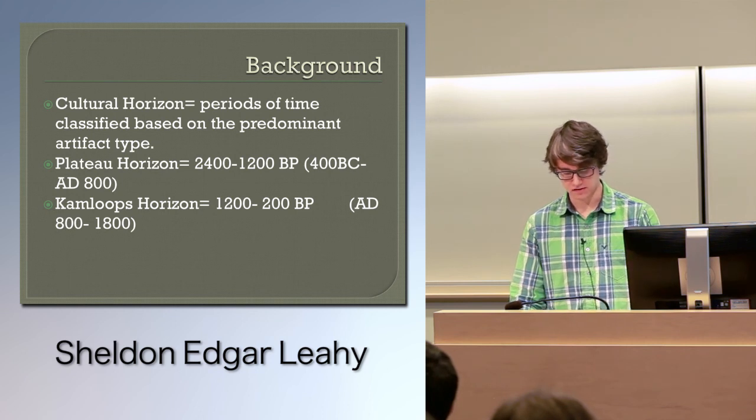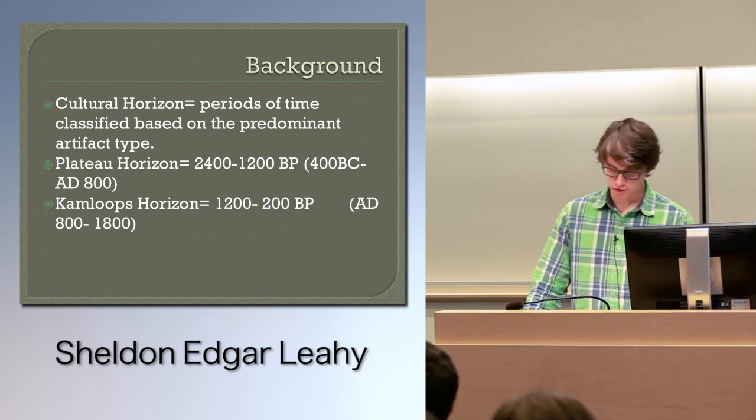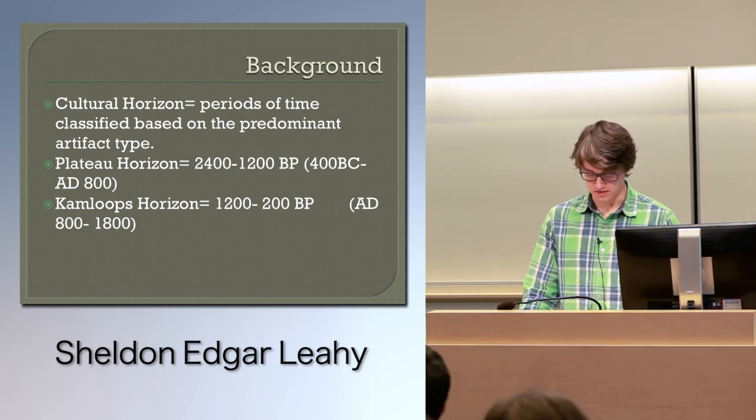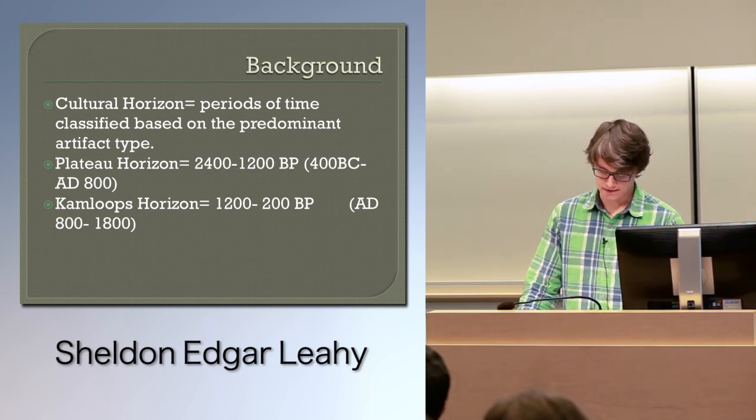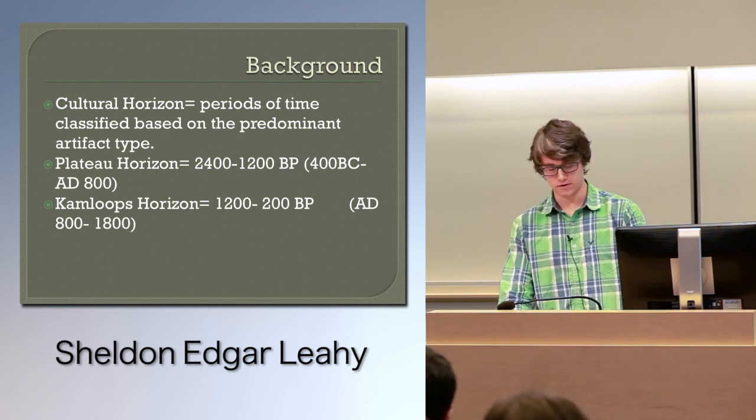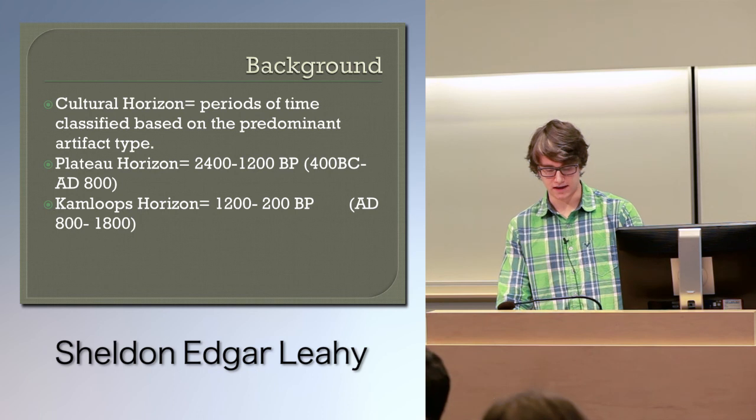The plateau horizon estimated to date between 2400 to 1200 before present BP, which is roughly 400 BC to AD 800. And then the Kamloops horizon, which is roughly 1200 to 200 BP, AD 800 to AD 1800.